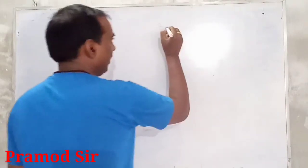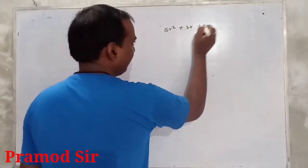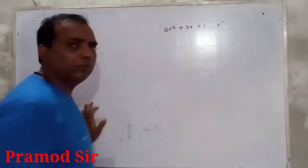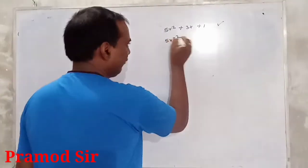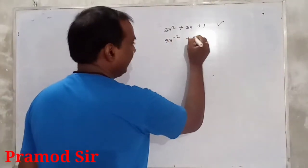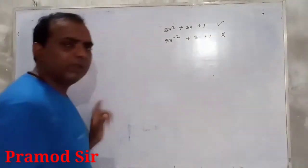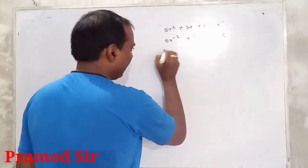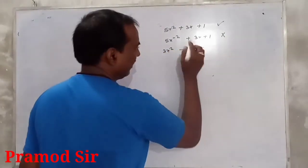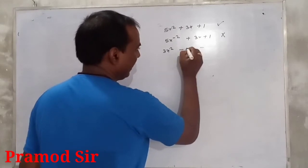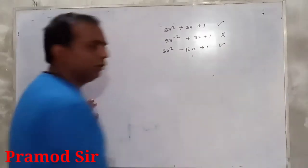For example, 5x² + 3x + 1 is a polynomial. But 5x^(−4) − 2 + 3x + 1 is not a polynomial. Also, 3x² − 2x − √2·x + 1 is a polynomial, but 3x² − 2√x + 1 is not a polynomial, because here x is written under a root sign, which makes the power negative.